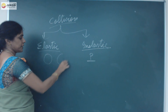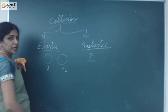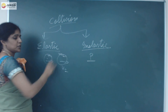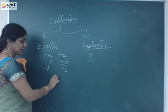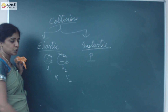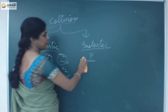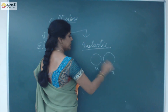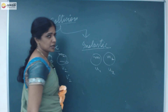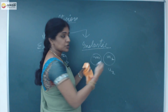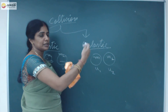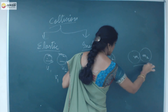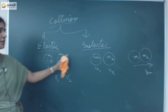Consider two objects with initial velocities u1 and u2. After collision, if the two objects have different masses or same masses, in elastic collision they will travel with different velocities, which we take as v1 and v2. But in inelastic collision, the two objects will stick onto each other and travel as a single system — both with masses m1 and m2 but traveling with the same velocity.